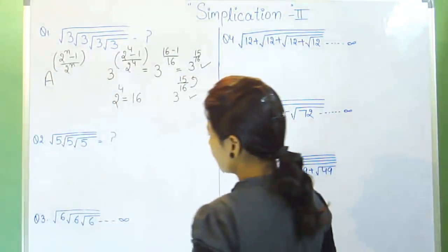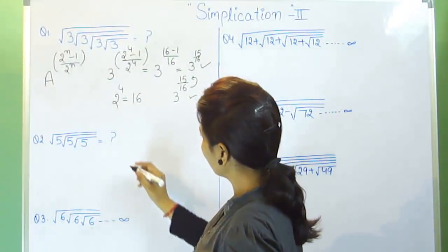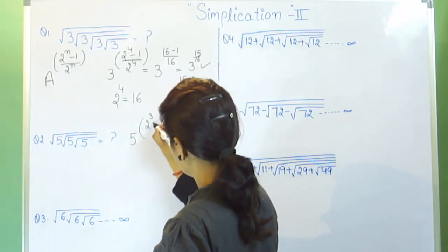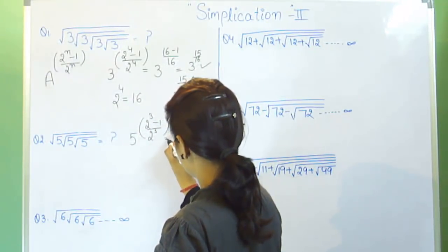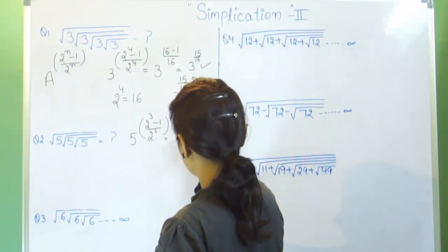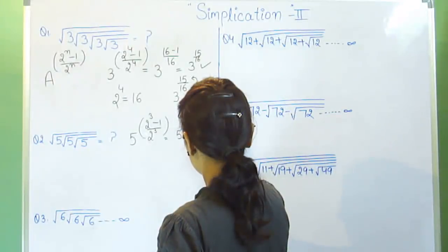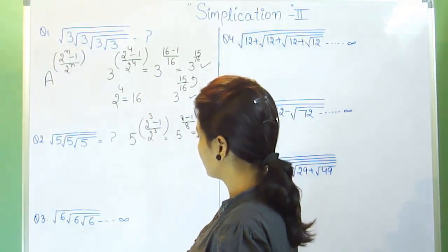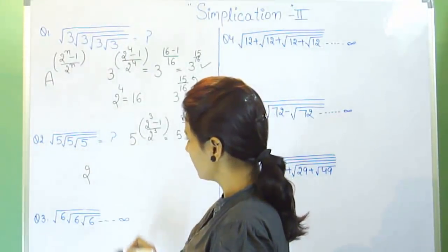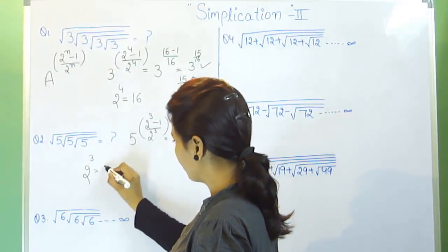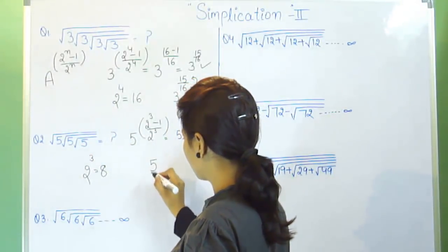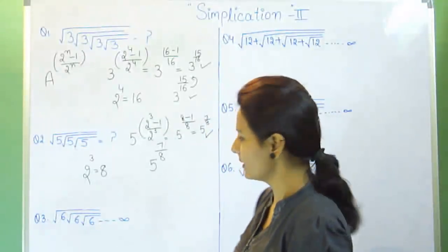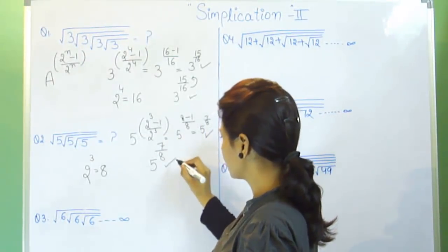Question number 2 is the same as question number 1. Again apply the formula and this is the answer. Again do this question with the trick. Take 2 as the base number. We have 3 roots, so put 3 here and we get 8. Write down the number given under the root. Put 8 as the denominator and the numerator should be 1 less than the denominator, that is 7. So this is the answer.